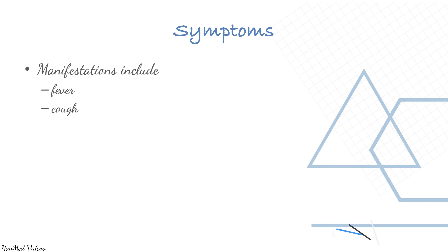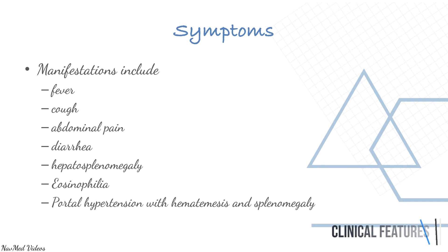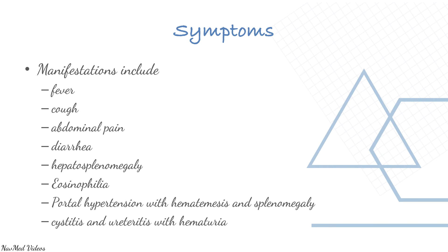The main symptoms of schistosomiasis include fever, cough, abdominal pain, diarrhea, hepatosplenomegaly, eosinophilia, portal hypertension, cystitis, and pulmonary hypertension.